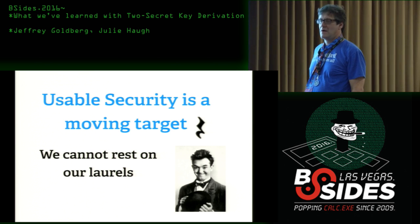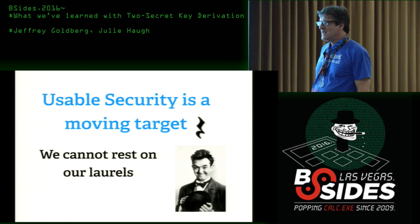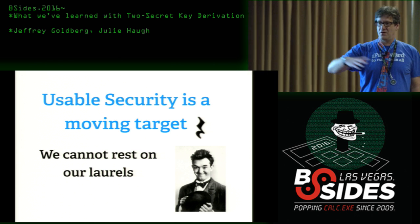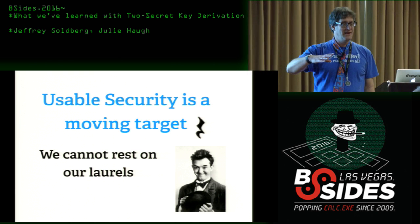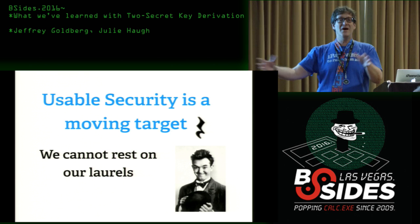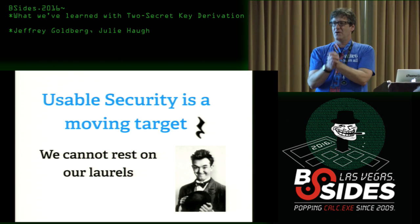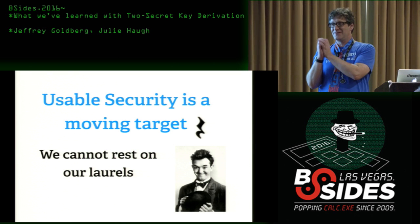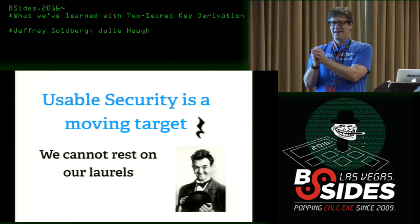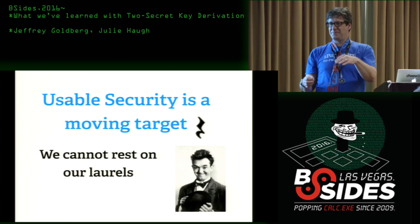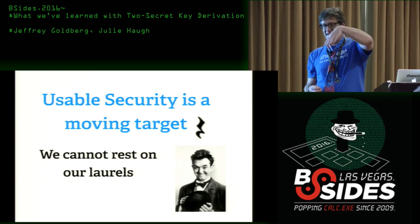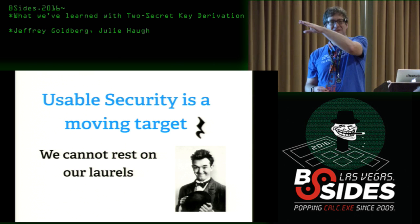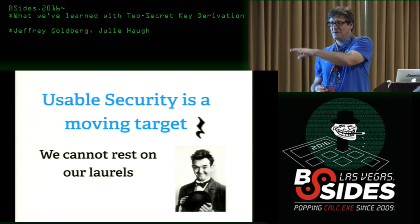Question: where does encrypting the vault key with the new member's public key happen — on your server or on the client? When an owner confirms somebody who has joined, what they do on their client is encrypt the shared vault key to the public key of the new member.